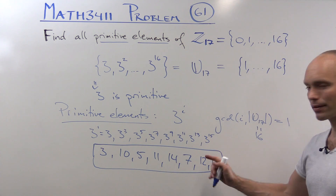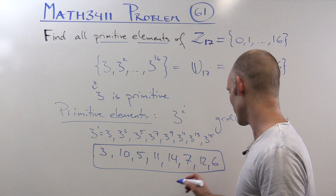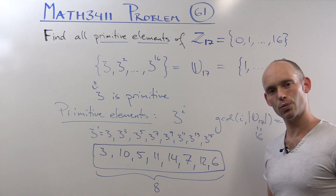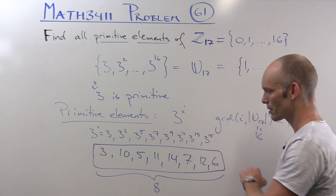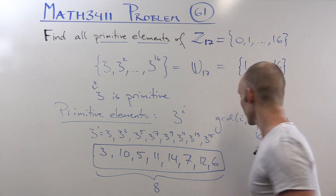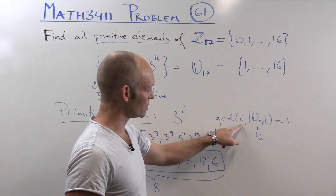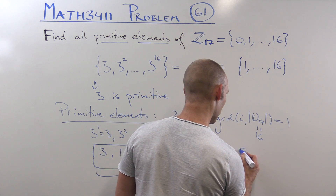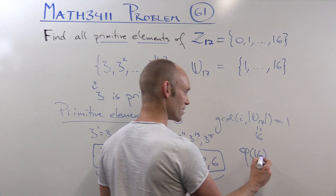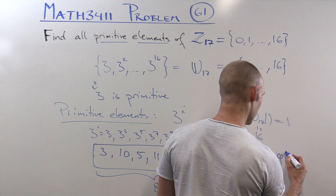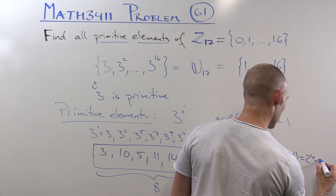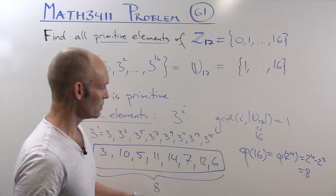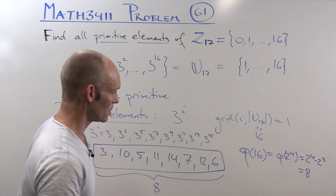If we count them — 1, 2, 3, 4, 5, 6, 7, 8 — we've got 8 primitive elements. We could figure out that number without calculating the specific elements, because the number of indices i that are co-prime with 16 is exactly the Euler function of 16, which is 2 to the power of 4 minus 2 to the power of 3, which is indeed 8. So the number of primitive elements is equal to 8.